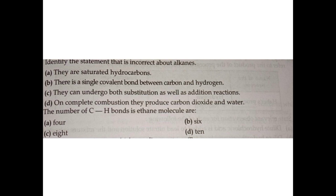Question number twelve: the number of C–H bonds in an ethane molecule is — the correct answer is option B: 6.